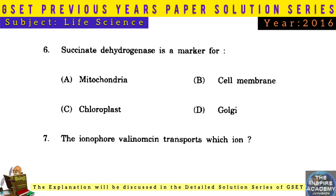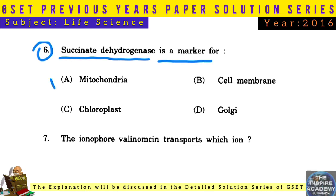Question No. 6: Succinate dehydrogenase is a marker enzyme for mitochondria.